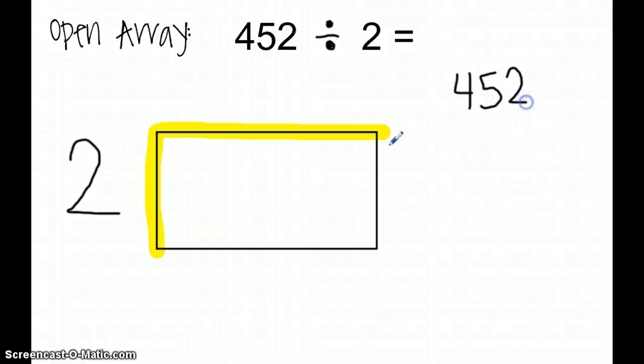When I find my products down here, my products should add to equal the sum 452. My first step in this process is to look at my largest place. My largest place is my hundreds place. So I'm going to start multiplying by multiples of 100 to get my answer.